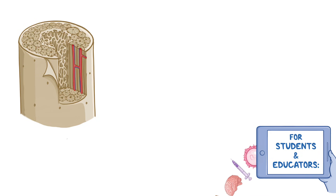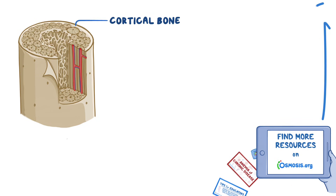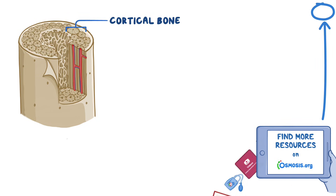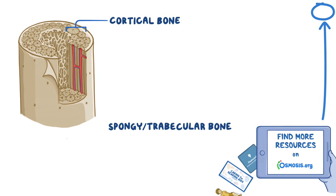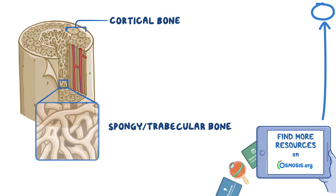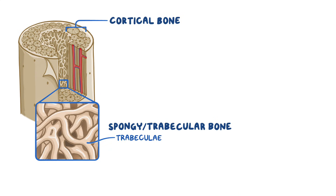Looking at a cross-section of a bone, there's a hard external layer known as the cortical bone and a soft internal layer of spongy bone, or trabecular bone, that is composed of trabeculi. The trabeculi are like a framework of beams that give structural support to the spongy bone.